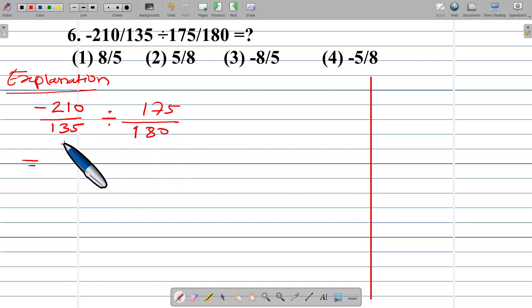Dividing a rational number by another rational number means multiplying by its reciprocal. So this is negative 210 upon 135 multiply 180 upon 175.